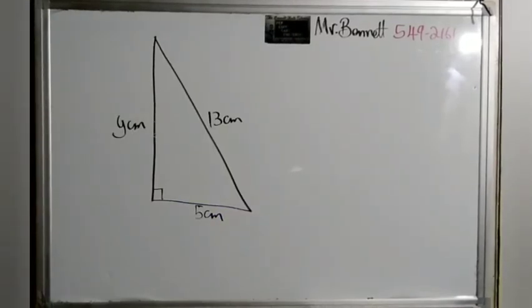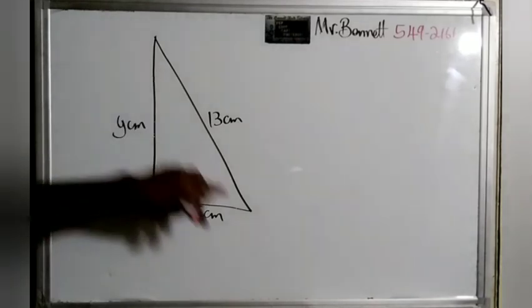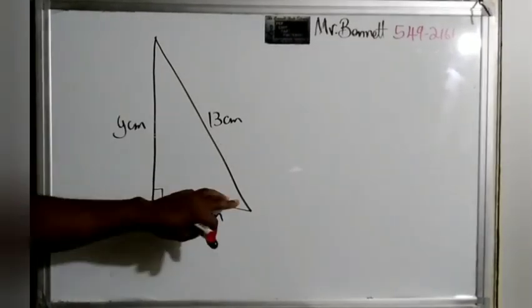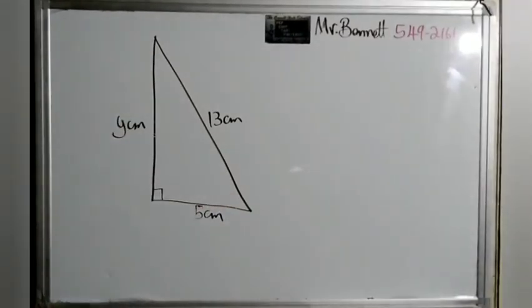Let's look at another one. This one seems a little bit different because normally we find this side, but now we are given this side. This side is known as the hypotenuse.